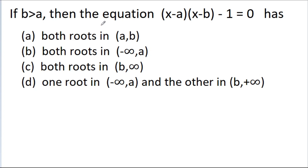In this video, we have given an equation that is (x-a)(x-b) minus 1 is equal to 0, where b is greater than a, and we have to find the location of the roots of this equation from four options. Option A is both roots in (a, b). Option B is both roots in (-∞, a). Option C is both roots in (b, +∞), and option D is one root in (-∞, a) and the other in (b, +∞).